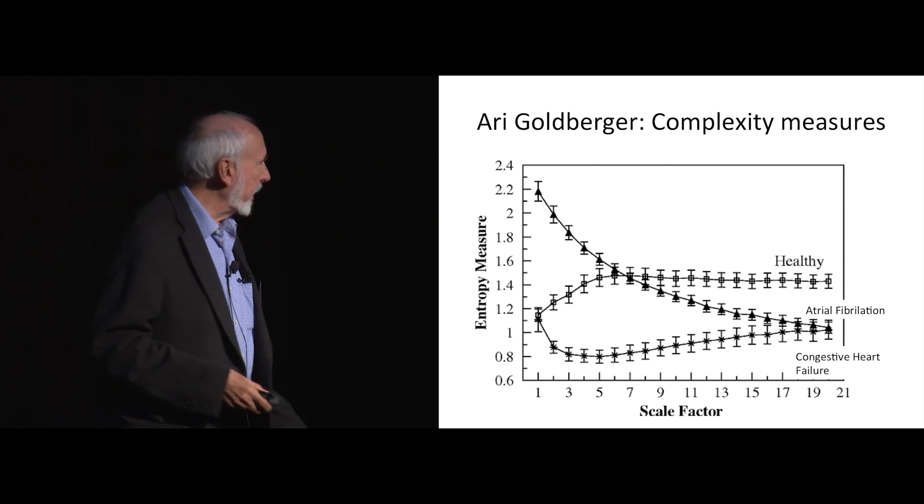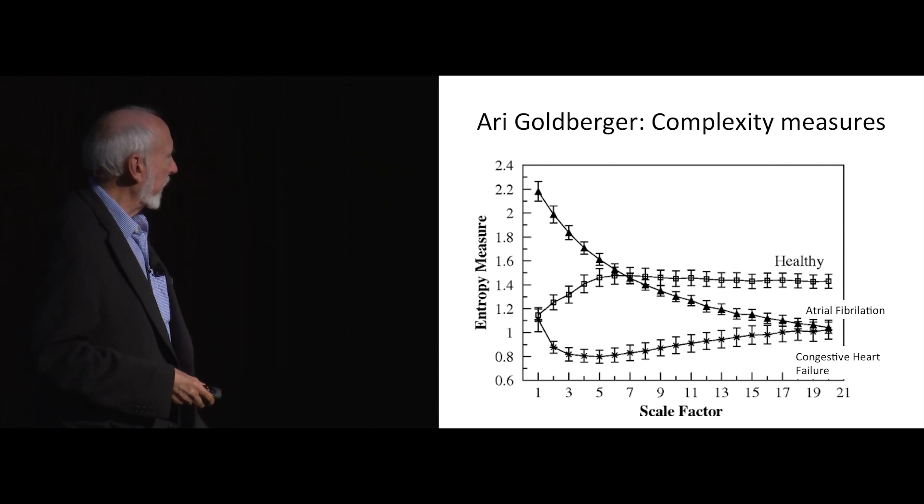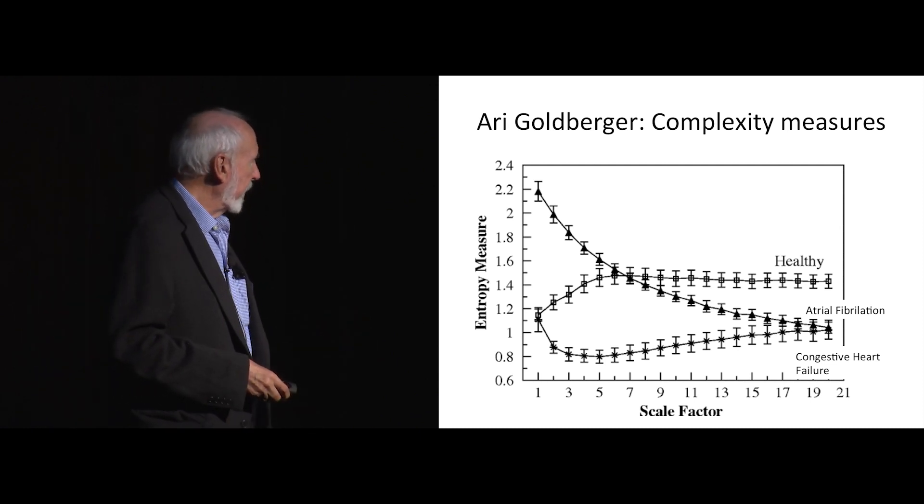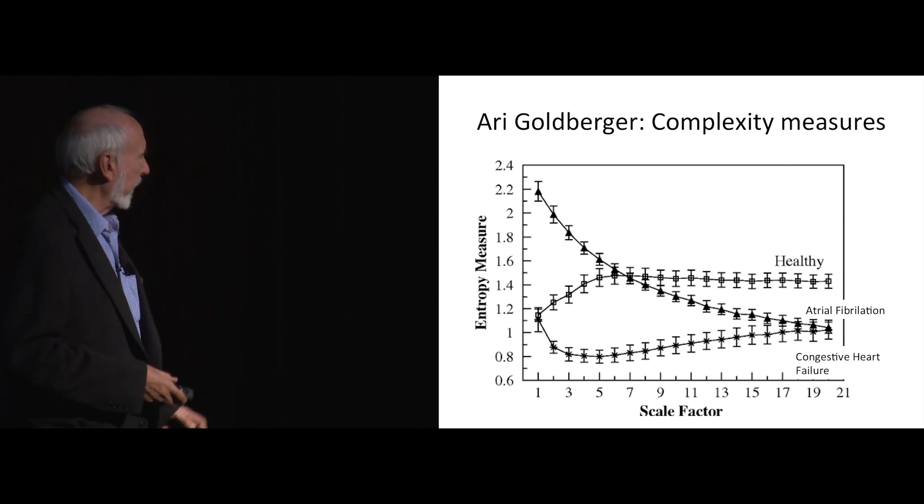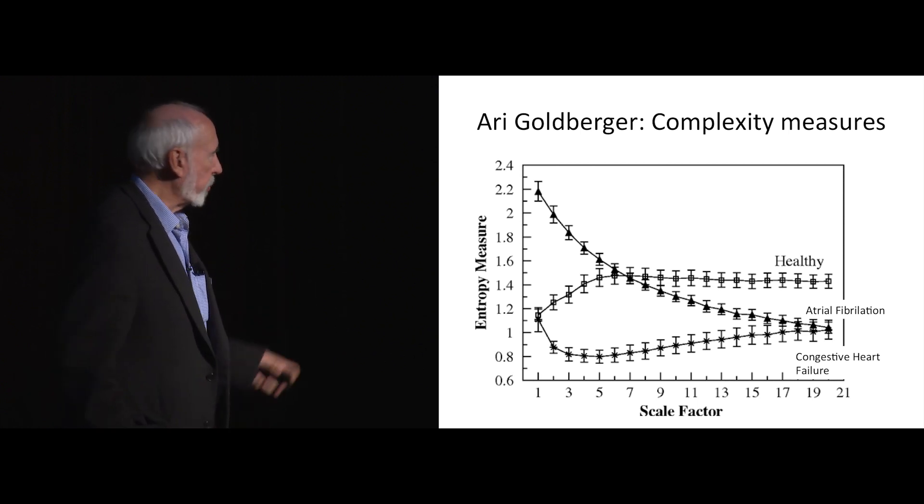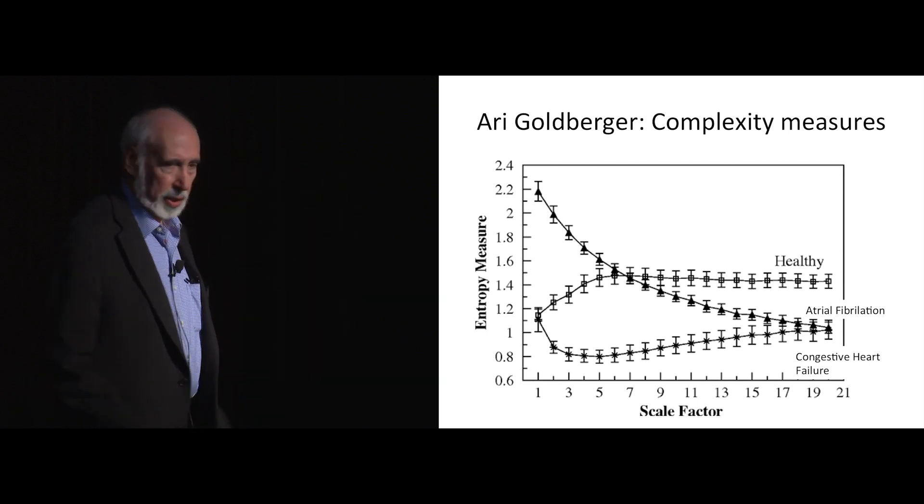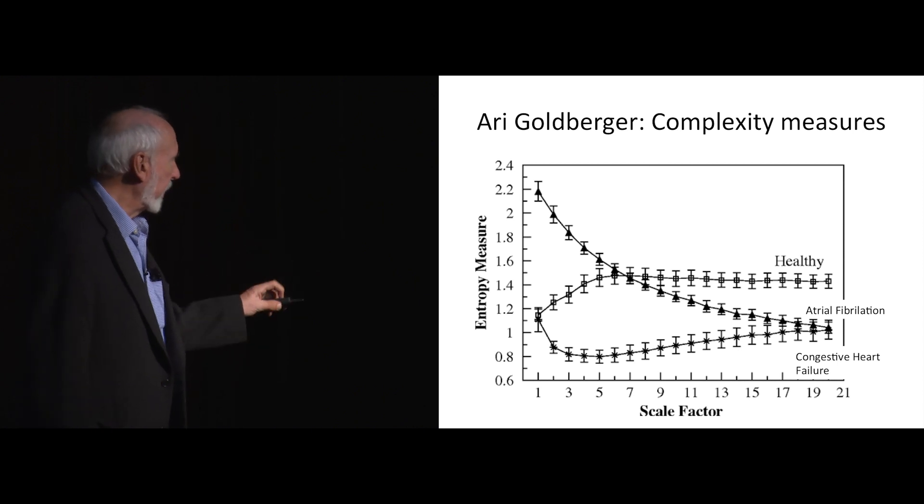In cardiology, by going into nonlinear measures of this, fancier measures that look at kind of the complexity of the signal, Ari Goldberger has been able to come up with data like this, where a kindergartner could tell you the difference between a healthy heart, an atrial fib heart, or a congestive heart failure. To do that, you have to kind of look at a multi-scale entropy measure that's quite sophisticated. But once you do that, this will be in every cardiologist's office in short time, because look at how powerful it is. It's an amazing diagnostic indicator.